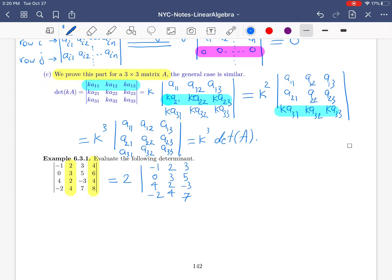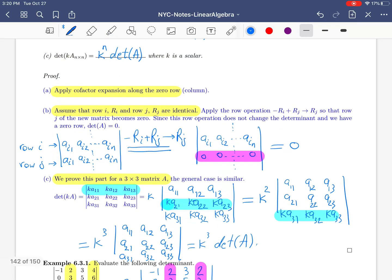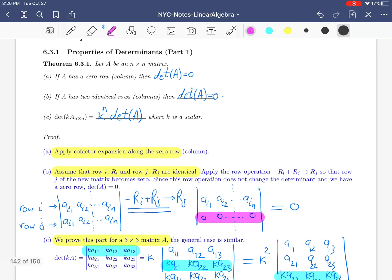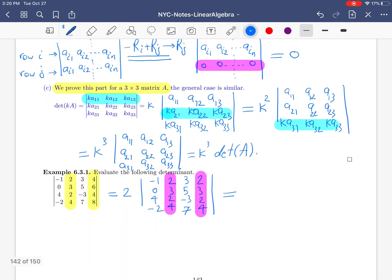Now, you see that you have two columns which are identical. That's why by property B, if you have two rows identical or two columns identical, then the determinant is 0.